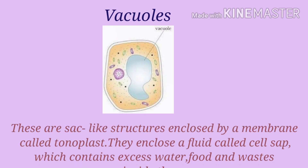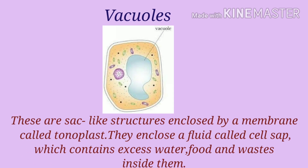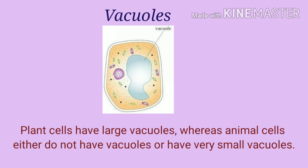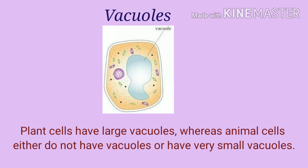Next one is vacuoles. These are sac-like structures enclosed by a membrane called tonoplast. They enclose a fluid called cell sap, which contains excess water, food and waste inside them. Plant cells have large vacuoles whereas animal cells either do not have vacuoles or have very small vacuoles.